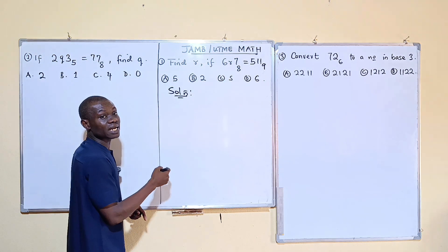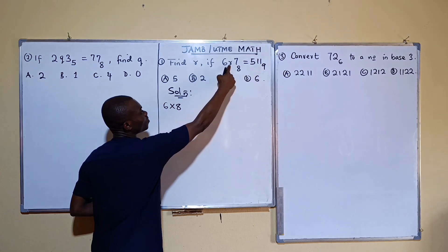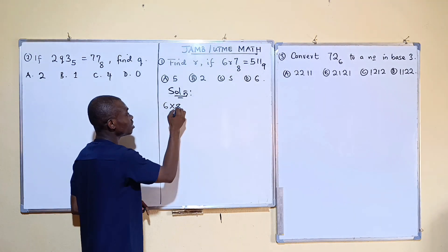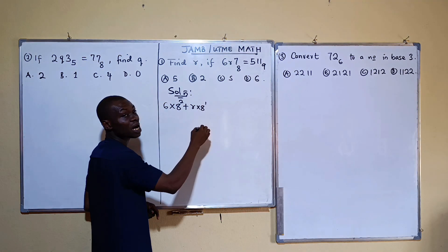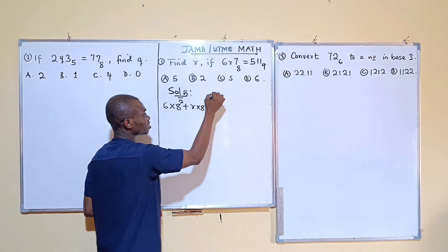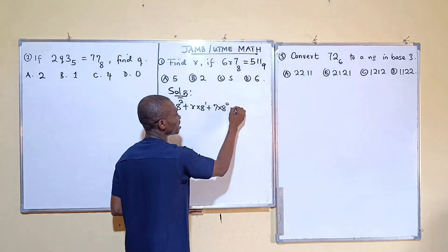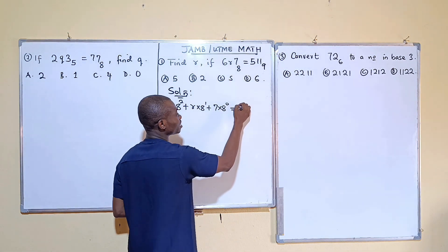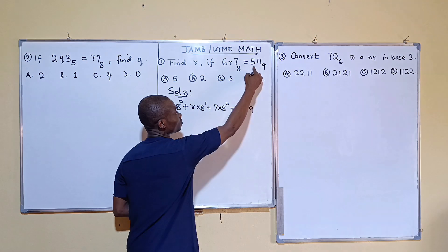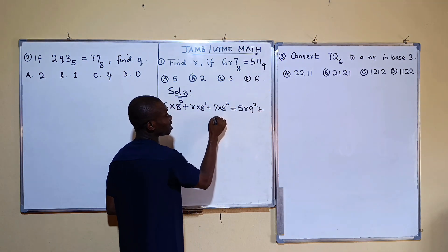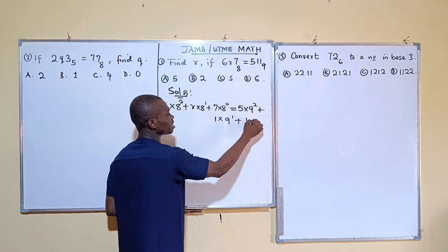To move the left side to base 10: 6 times 8 to the power of 2, plus r times 8 to the power of 1, plus 7 times 8 to the power of 0. That equals the right-hand side in base 10: 5 times 9 to the power of 2, plus 1 times 9 to the power of 1, plus 1 times 9 to the power of 0.